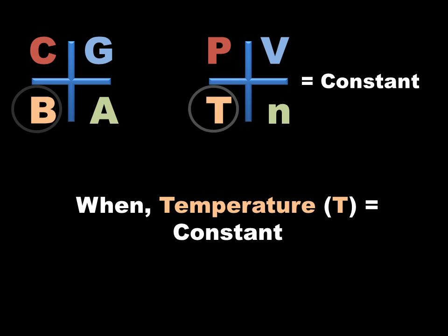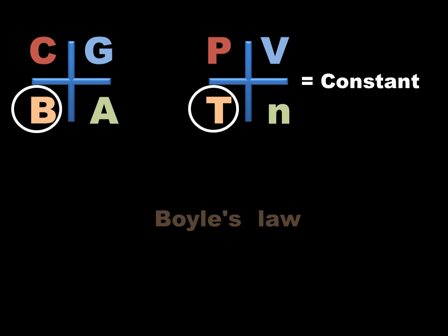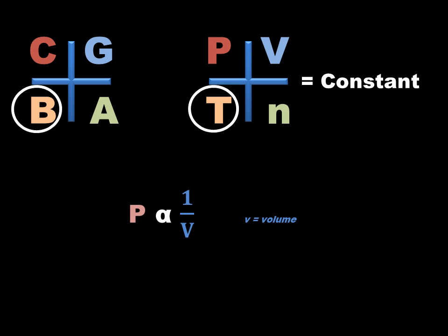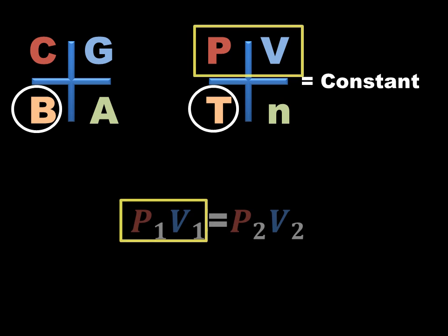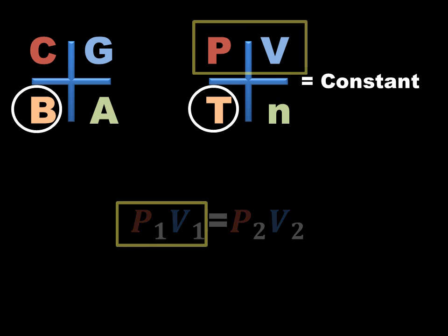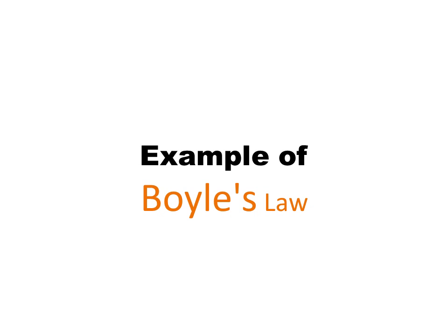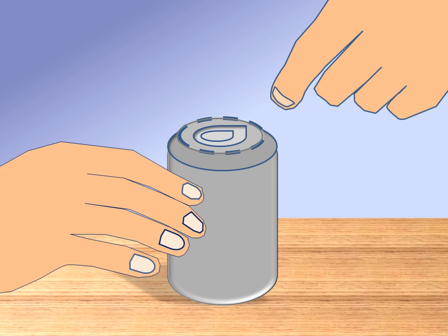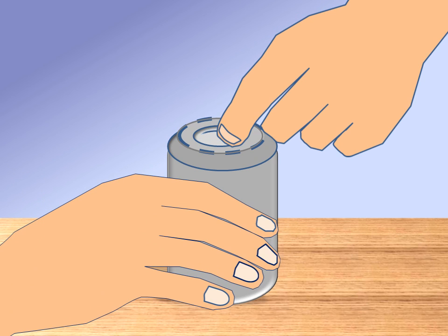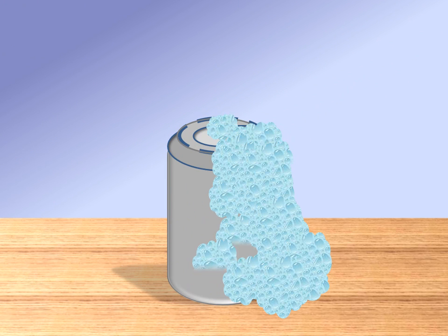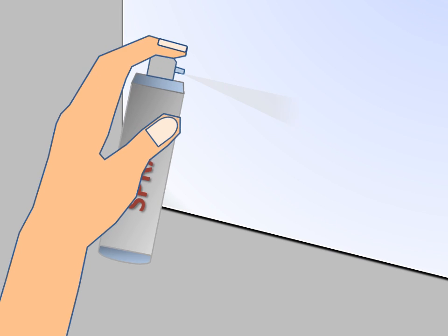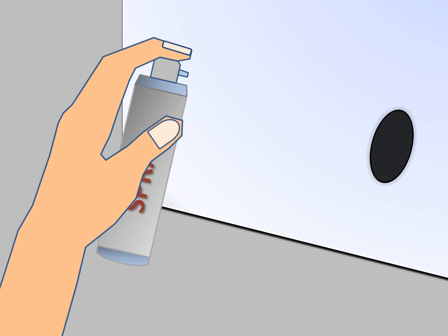When temperature T is constant, this process is governed by Boyle's Law. P is inversely proportional to V, and the equation is P1·V1 equals P2·V2. Example: when a soda can is opened, foam jumps out — pressure inside decreases and volume increases. Spray painting is another example of Boyle's Law.